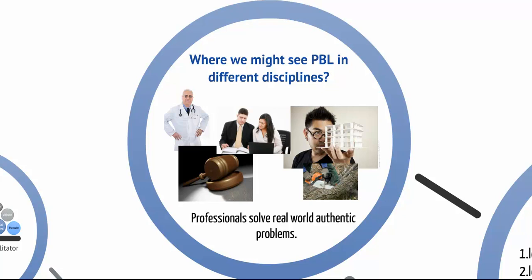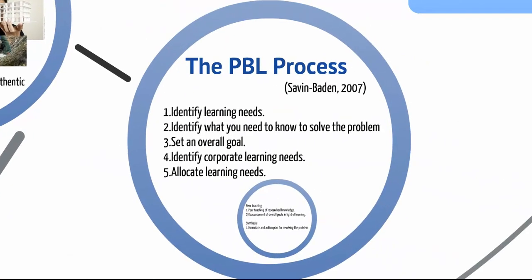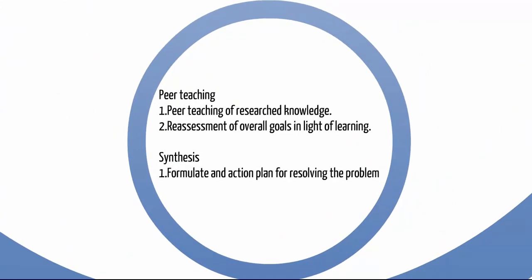So what do we actually do with this? The PBL process, as identified by Savin-Baden, is as follows. First, you'll identify your learning needs, asking yourself what are the problems or issues at hand. Next, you need to know where and who you'll go to to start to solve the problem. Set your overall goal, identify your group learning needs, and then allocate those to people within your group. You'll have a chance to do the peer teaching portion in the tutorial section of the course. And you'll have some time to synthesize and formulate an action plan for resolving the problem.